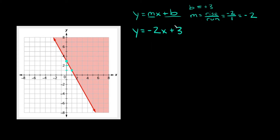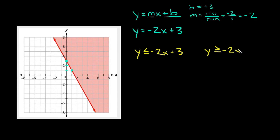Now the only other thing we have to do is change our equal sign into an inequality sign. In this case we're going to have either y is less than or equal to negative two x plus three, or y is greater than or equal to negative two x plus three. Notice I attached the equal signs onto the inequalities this time, because the equation of the line is solid — since this is a solid line, you attach the equal-to symbols.